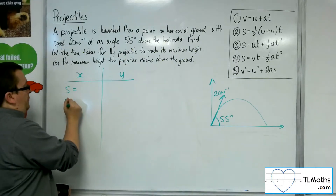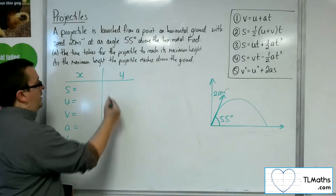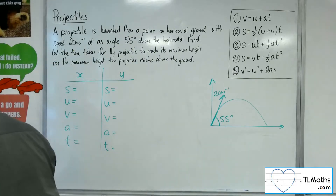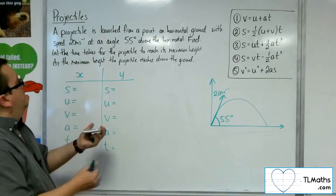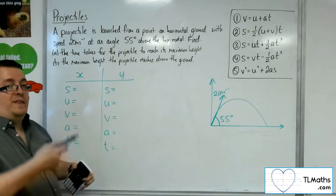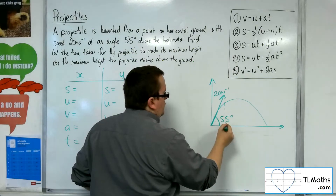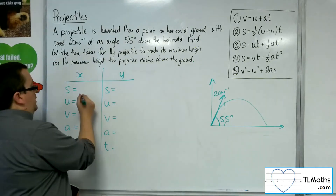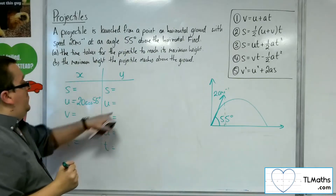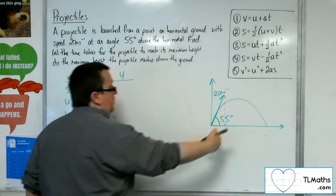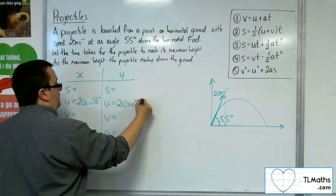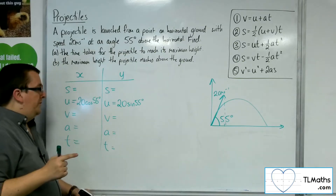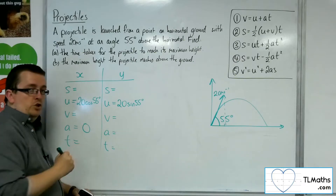For each of these, we're looking at a set of SUVAT equations. What information do I currently know? The initial velocity for the x component — thinking of that as a right-angle triangle — will be 20 cosine 55, because we look at the adjacent side. The initial velocity for the y component will be the opposite side, so 20 sine 55. I don't know what the displacement is, I don't know what the final velocity will be. The acceleration: there is no acceleration horizontally.